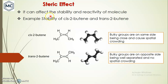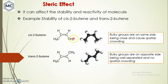Steric effect can affect the stability and reactivity of a molecule. First, we will consider the stability of cis-2-butene and trans-2-butene. In cis-2-butene, two methyl groups or bulky groups are on the same side — you can see here — so they are very close and can cause spatial crowding, resulting in steric interaction. Whereas in trans-2-butene, the bulky groups are on opposite sides, so the methyl groups are on opposite sides, as you can see here.